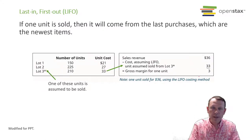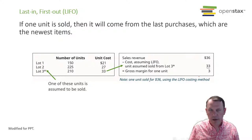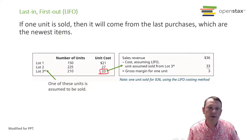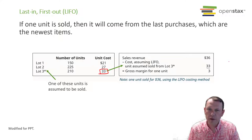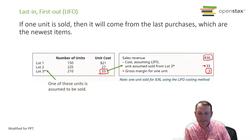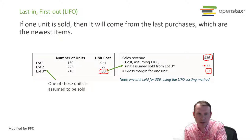LIFO is last in, first out. Our newer item — lot three — is way more expensive at $33 a piece, so the cost of our inventory is going up. We move that $33 cost over, subtract it from our sales price, which of course is the same. Our margin is $3.